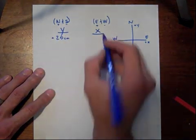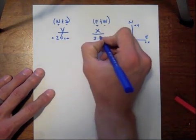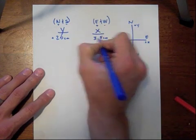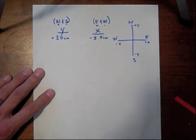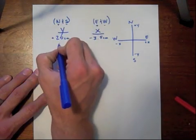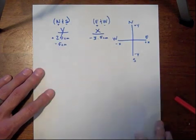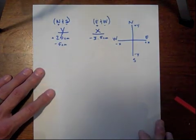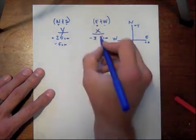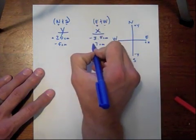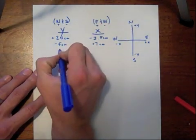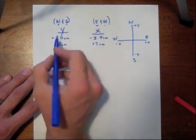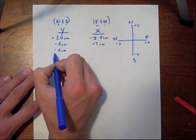The next one is 3.5 centimeters west, so that goes in the x column, and we're going to have to make it negative. The next one is 5 centimeters south, so that goes over here in the y column, and since it's south, it's going to be negative. The next one is 7 centimeters east, that goes in the x column, and that's going to stay positive because it's pointing in the east direction. And then finally, we end with 5 centimeters south, which goes in the y column, and it's going to be negative again.